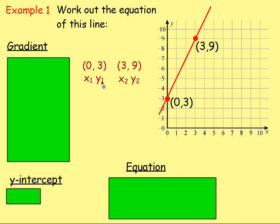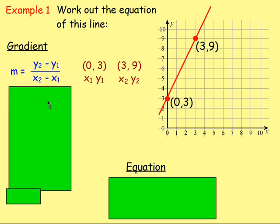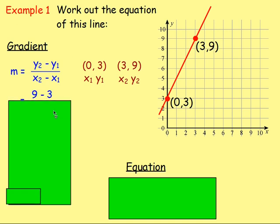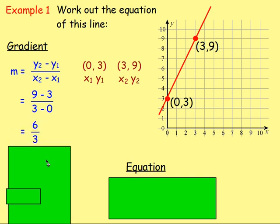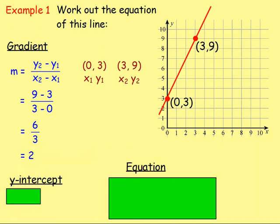Call this point 1 — so that'll be x1 and y1. And with the 3,9, that's point 2 — so call it x2 and y2. In order to work out the gradient of the line, the formula is y2 take away y1 over x2 take away x1. Substituting in the numbers: y2 take away y1 will be 9 take away 3, and x2 take away x1 will be 3 take away 0. That gives us 6 over 3, and 6 divided by 3 gives us 2. So we know the gradient is 2.